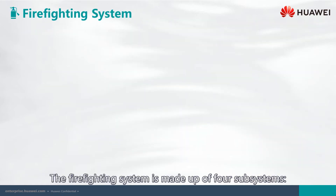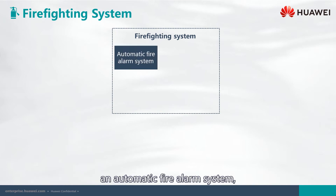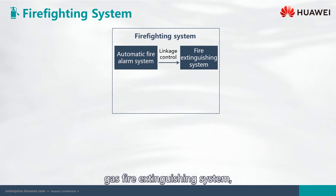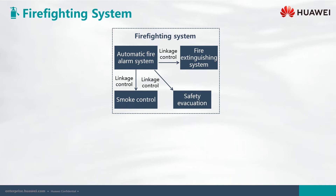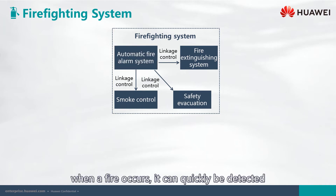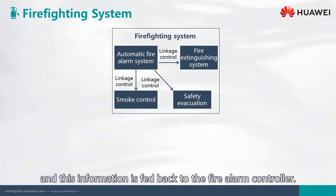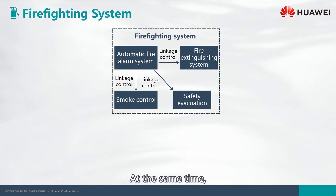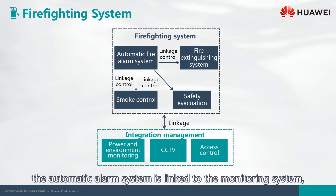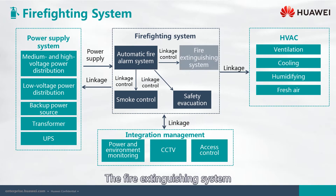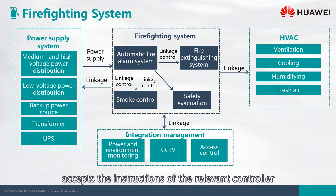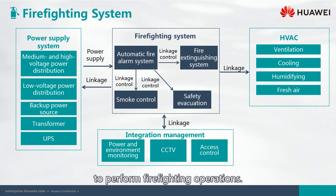The firefighting system is made up of four subsystems: an automatic fire alarm system, gas fire extinguishing system, smoke control system, and safety evacuation system. When a fire occurs, it can quickly be detected and this information is fed back to the fire alarm controller. At the same time, the automatic alarm system is linked to the monitoring system, the power supply system, and the HVAC system. The fire extinguishing system accepts the instructions of the relevant controller and controls the firefighting equipment to perform firefighting operations.